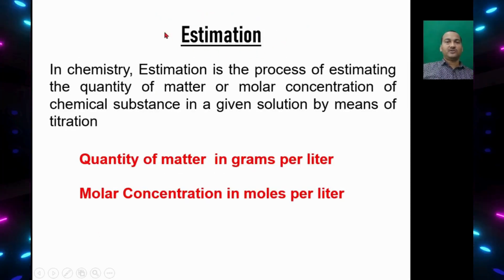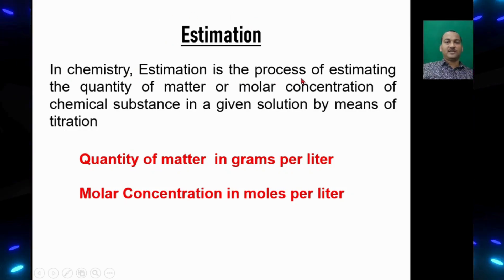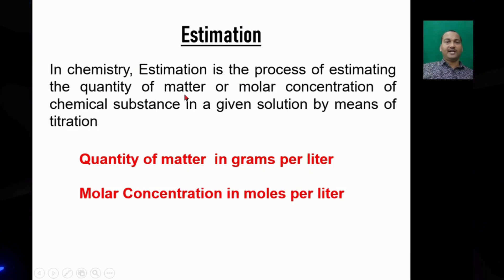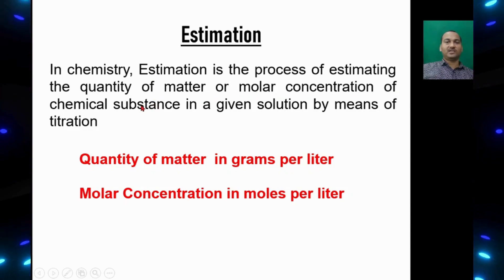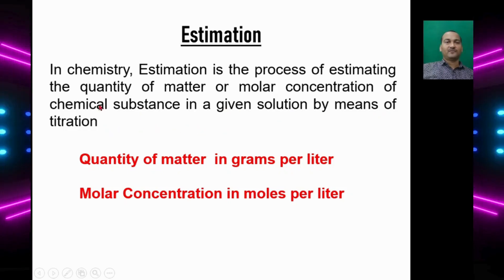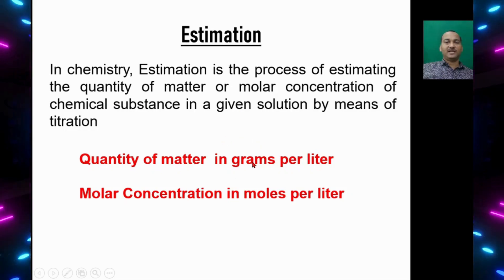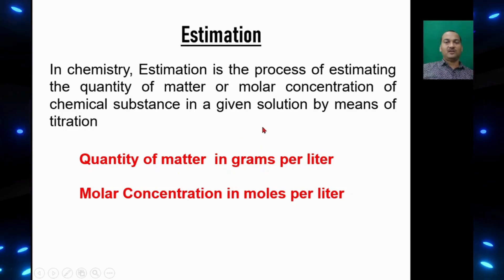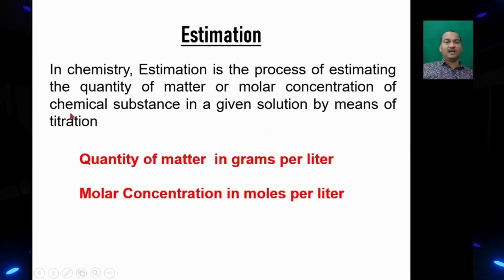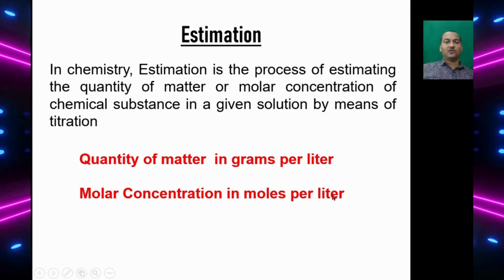In chemistry, estimation is the process of estimating the quantity of matter or molar concentration of chemical substance in a given solution by means of titration. Quantity of matter is usually expressed in grams per liter and molar concentration in moles per liter.